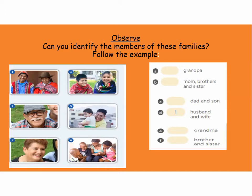En la nota A nos da la frase Grandpa. ¿Dónde está la imagen del Grandpa? Nos está dando a la mom, a los brothers, and sister. ¿Dónde está la mom? ¿Dónde está los brothers? ¿Y dónde está la sister? Number six. Yes, very good. Excellent.